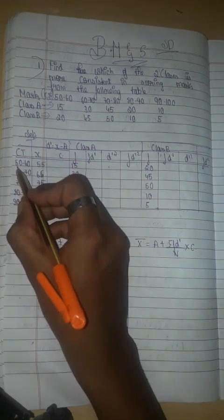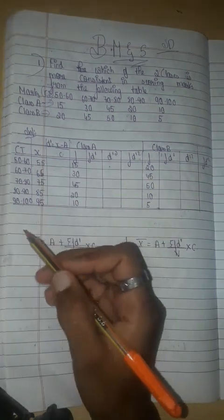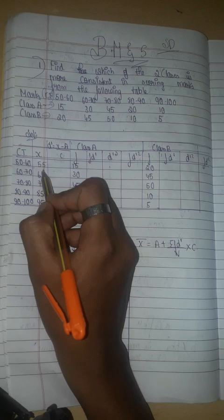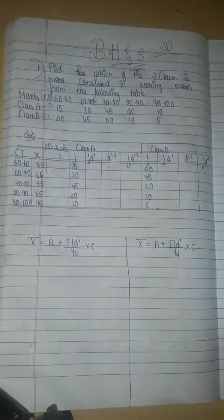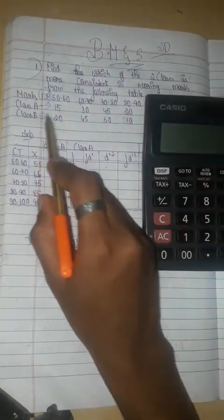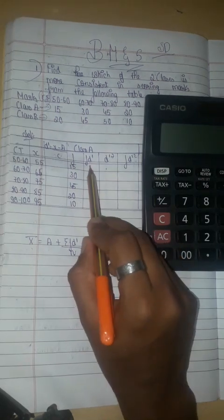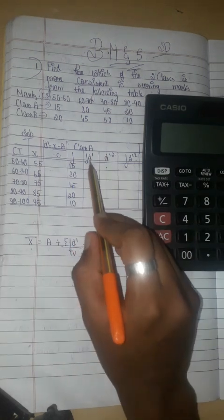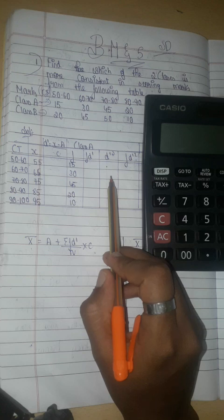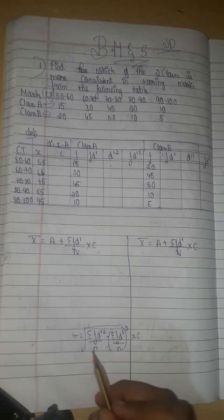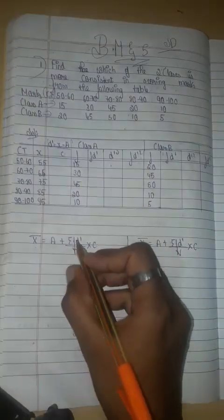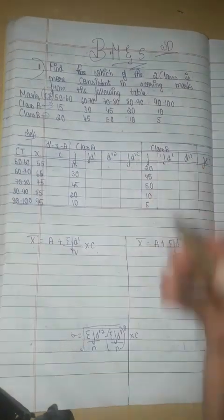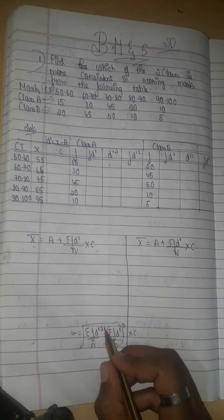Finding x: for the class interval 50 to 60, x is (50 + 60) divided by 2, which gives the midpoint. The middle value for 50 and 60 is 55, so that is our x value. Then we find d', and for Class A we look at the frequency column and find fd'. We use this to calculate the mean using the formula with sigma fd'.